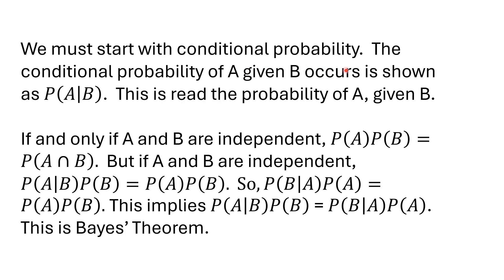We must start with conditional probability. What is it? The conditional probability of A given B occurs is written as P(A|B). So B is something that occurs or something that we know. For a simple example: what is the probability of a deck of cards having the king of spades on top? That would be 1 in 52. But if I know the bottom card is the eight of clubs, now it is 1 in 51. And if I know the bottom card is the king of spades, it becomes 0 in 52, or 0. So knowing something changes probabilities.